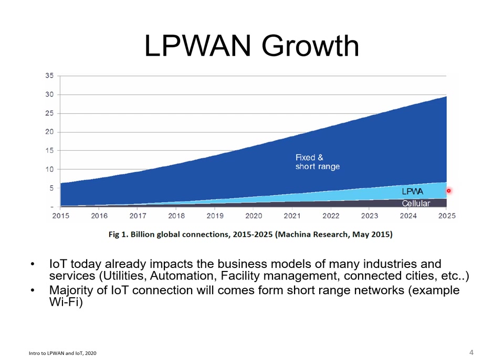There is an increasing trend in LPWAN. The number of devices that will join the network are phenomenal in the next few years. Just think about one application — utility metering. Take an even narrower example: water utility metering. If only the water meters in Victoria join the network, you'll have millions of new users, far more than the annual increase in subscribers of mobile telecom operators.